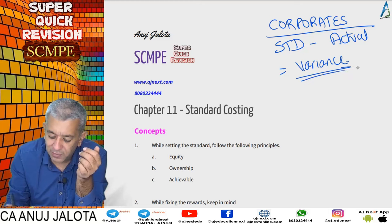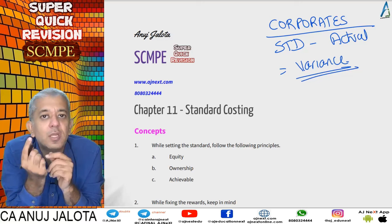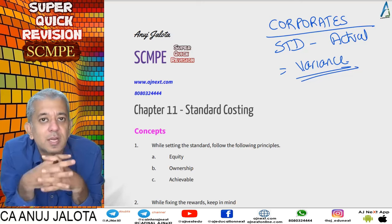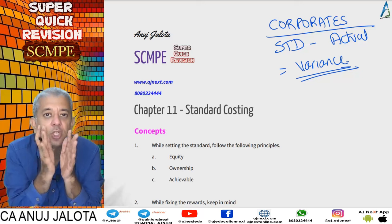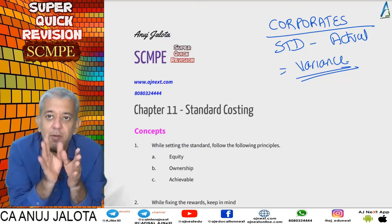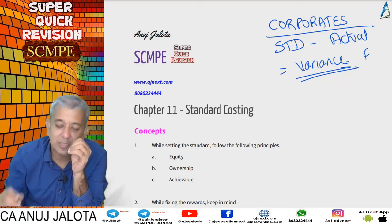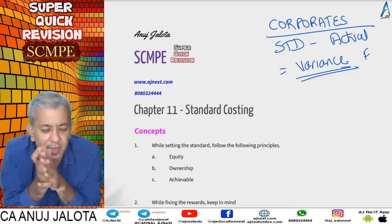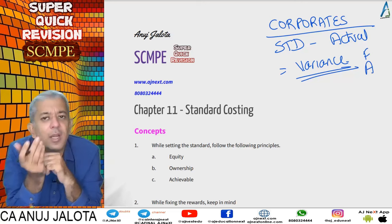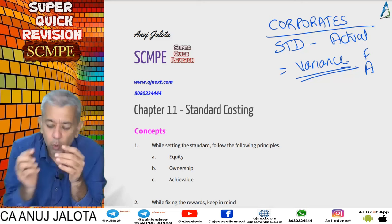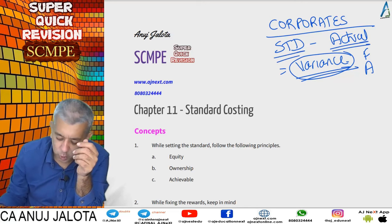The difference between any standard and actual is called a variance. This variance exists for one small thing — judging the performance of the manager. If a manager has done a good job, it is called a favorable variance, symbolized by F. If a person has done a bad job, it is called an adverse variance. Any variance comes because of the difference between standards and actuals.